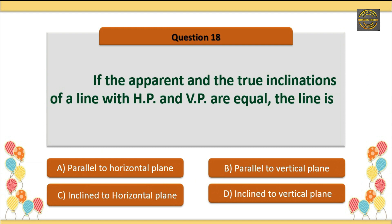Question 18: If the apparent and true inclinations of a line with HP and VP are equal, the line is? Option B is correct: Parallel to vertical plane.